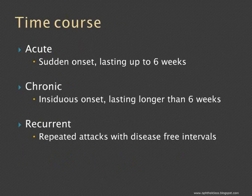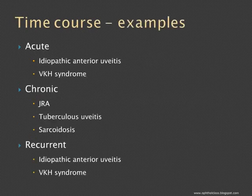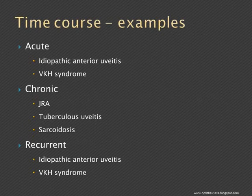Regarding time course: acute uveitis is sudden in onset and lasts up to 6 weeks. Chronic uveitis is insidious in onset and lasts longer than 6 weeks, sometimes 3 months or more. Examples of acute presentation include idiopathic anterior uveitis and VKH syndrome in both anterior and posterior uveitis. The most common cause for chronic anterior uveitis is juvenile rheumatoid arthritis. Sarcoidosis can also have a chronic time course — insidious and progressive over months and years.